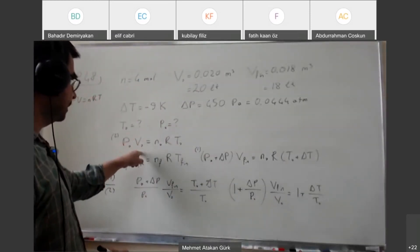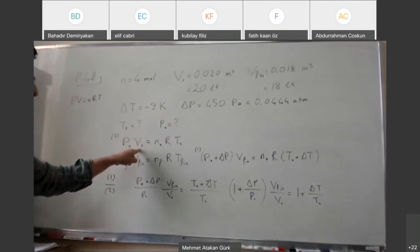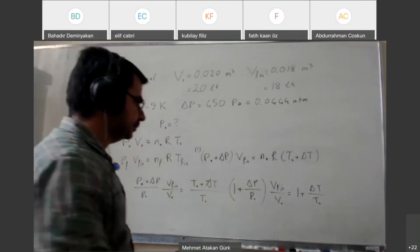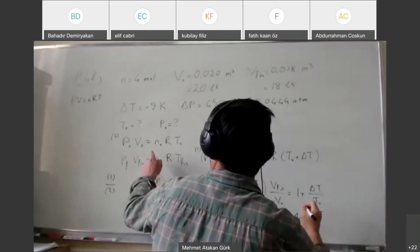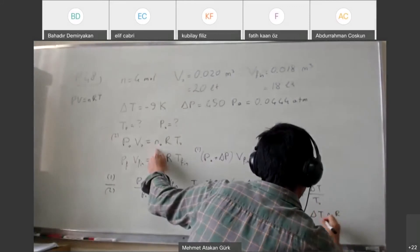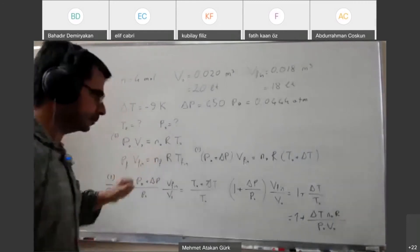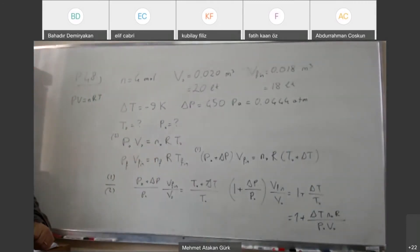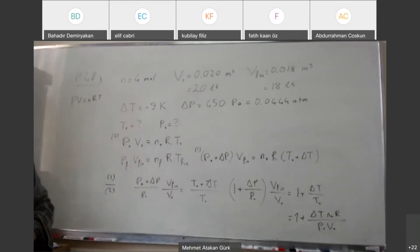I can write the left hand side is one plus delta P by P0 times V final by V0 that is equal to one plus delta T by T0. Now I need to eliminate one of these variables, P0 or T0. I think it's easier to eliminate T0 by using this. So T0 is going to be P0 V0 divided by n0 times R.